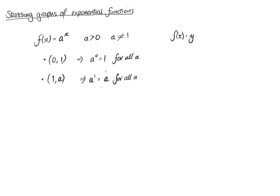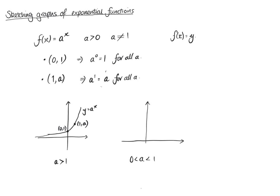These two points are going to help us sketch any exponential graph we want, at least before we start moving it about. We've got two different versions of these graphs. The first is exponential growth, which happens when a is greater than 1 — you have the points (0, 1) and (1, a). But if a is between 0 and 1, then instead of exponential growth, you have exponential decay.